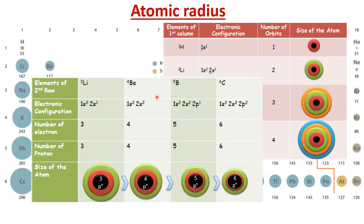Across a row, the atomic radius decreases. For lithium (3 electrons, 3 protons), beryllium (4 electrons, 4 protons) has more protons, so the attraction between nucleus and electrons is stronger and the size is smaller than lithium. Moving to boron (5 electrons, 5 protons), the size decreases further, and similarly for carbon. So across a period, increasing proton count pulls electrons closer, progressively reducing atomic radius.